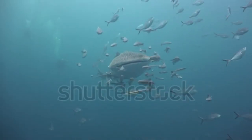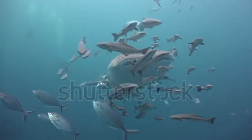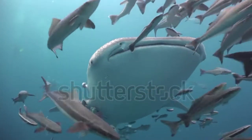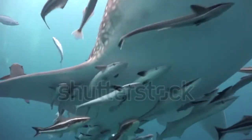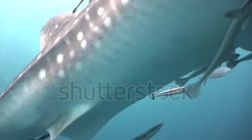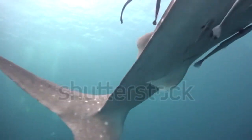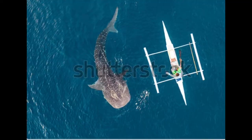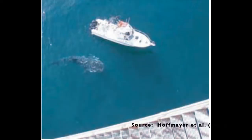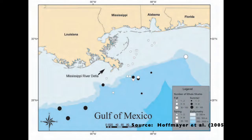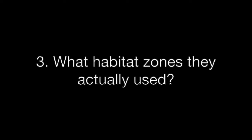Prior to this study, our limited understanding of whale shark migratory patterns and habitat use in the Gulf of Mexico was based on identifying individuals from opportunistic sightings from fishermen, tourists, and offshore oil rig workers. We knew that at least some whale sharks aggregated in the northern Gulf of Mexico, but it was still unknown why they aggregated there, where they went when they left, and what habitat zones they actually used.